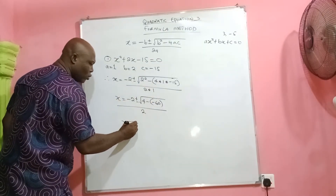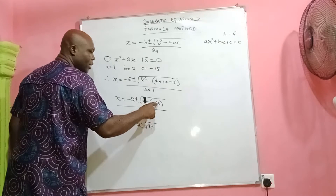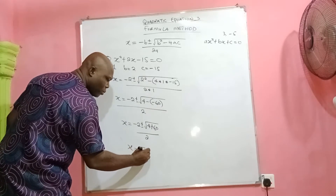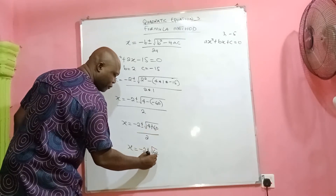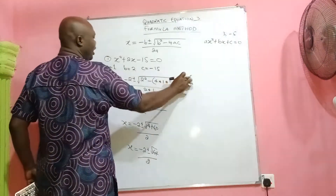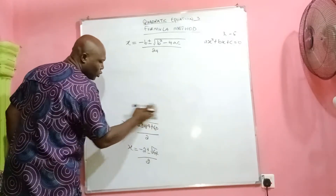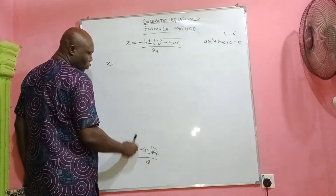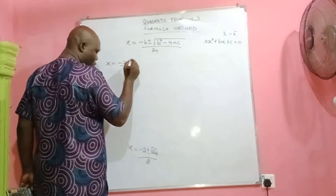So x = −2 ± √(4 − (−60)). The minus of a minus becomes plus, so that's 4 + 60 = 64, all over 2. Therefore x = −2 ± √64, and the square root of 64 is 8, all over 2.